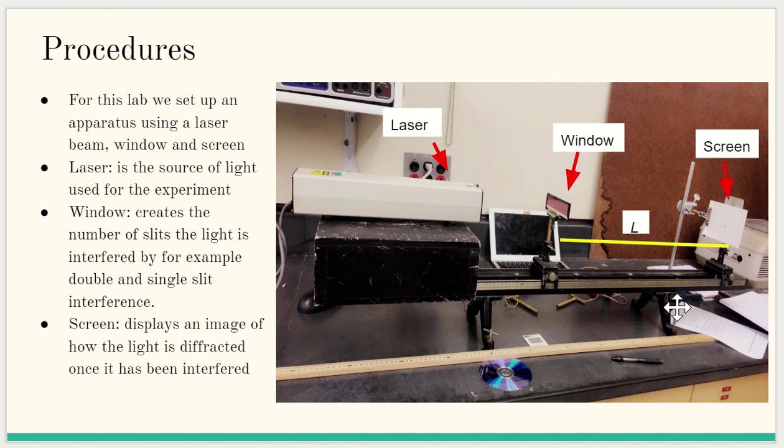For this lab we set up an apparatus using a laser beam, window, and a screen. The laser is the source of light used for the experiment. The window creates the number of slits the light is interfered by, for example double and single slit interference. The screen displays an image of how the light is diffracted once it has been interfered.